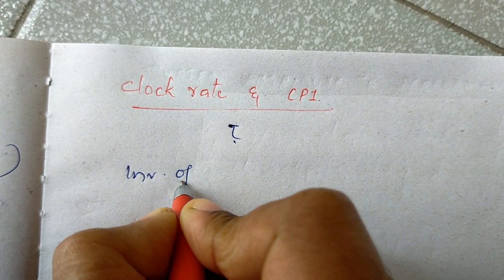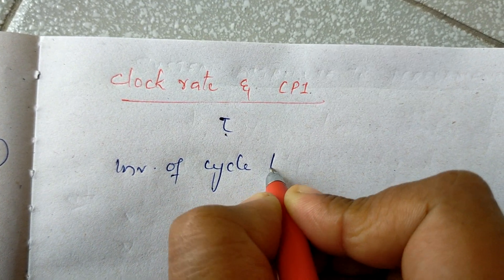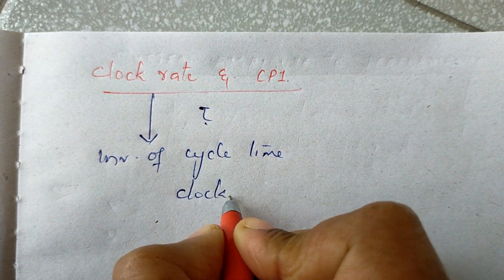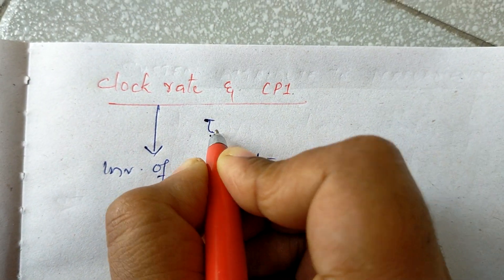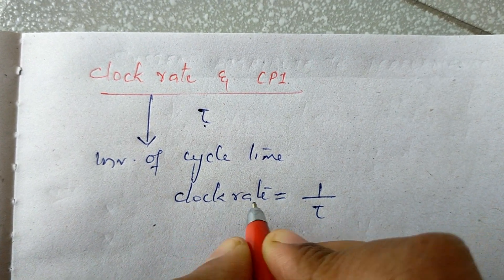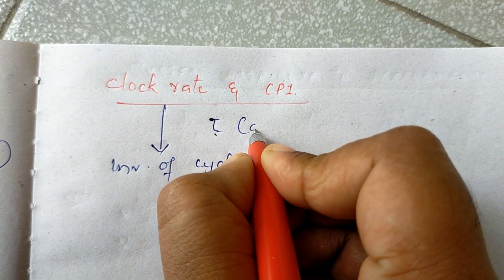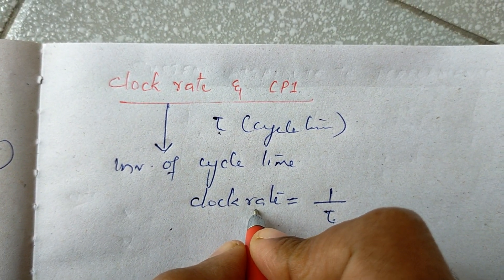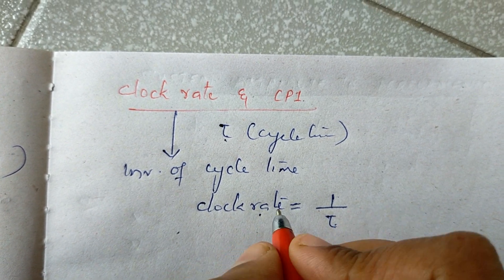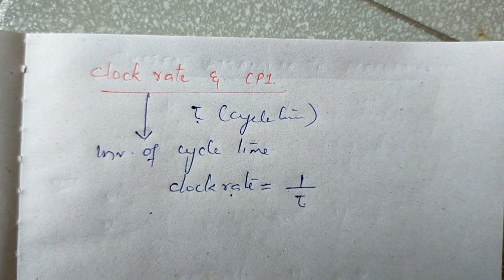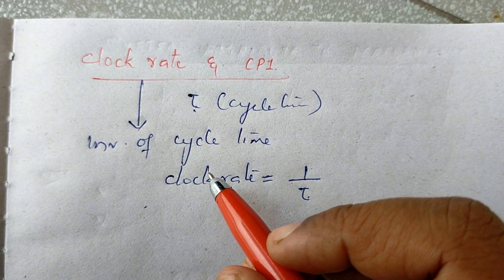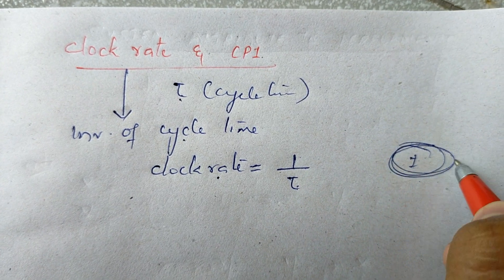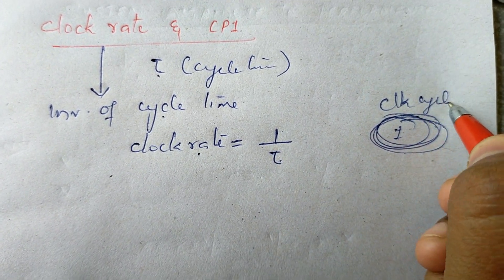The inverse of cycle time is known as clock rate. Clock rate is the same as the inverse of cycle time — that is the computer time relationship.